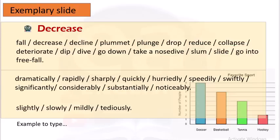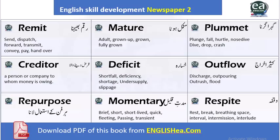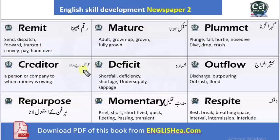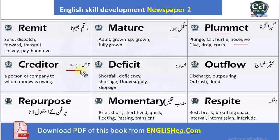Let's move back to our reading. Hum baat kar rahe the in words ki — jaise ke humne pehla lafz parha: remit. Phir mature ki taraf gaye — jab koi cheez mukammal ho. Plummet — jab koi giraye, nose dive le, fall ho, plunge ho. Phir 'creditor' hota hai jo karz deta ho, paise deta ho udhar ke taur pe — usme woh interest hote hain, usme kuch shuraat hoti hai. Aur 'owning' kar raha hota hai. 'Deficit' — simple si baat hai — koi cheez kam ho jana, nuqsaan mein aana, khasare mein aana.